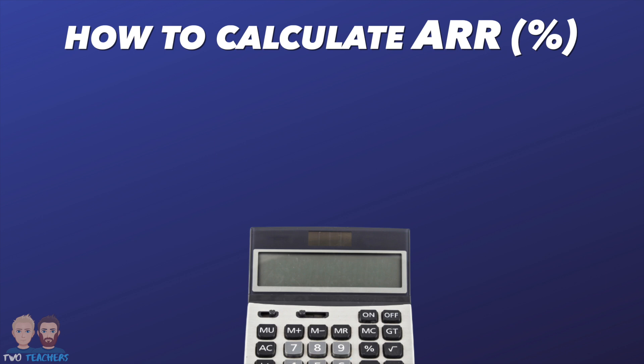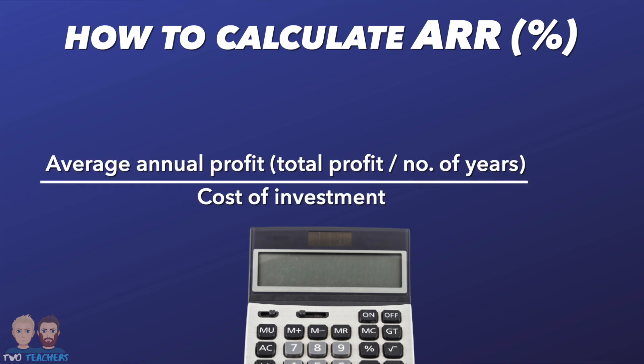The average rate of return is calculated by dividing the average annual profit generated from an investment by the total cost of the investment and multiplying the result by 100 to express it as a percentage. But you won't always be provided with the average annual profit figure. If you aren't, don't panic. You simply need to calculate the total profit return from the investment and divide it by the number of years the investment is expected to generate a profit for, and this will give you the average annual profit figure.